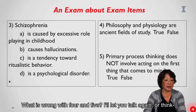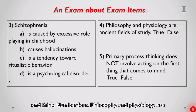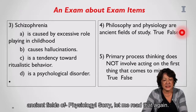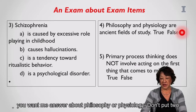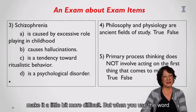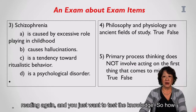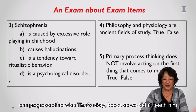What is wrong with items four and five? For number four: 'Philosophy and physiology are ancient fields of study.' Don't put two subjects in your stem because students don't know which one you want them to answer. For number five: don't use negative stems with the word 'not' — that tests reading rather than knowledge. So, how did you do? If you did well, we can progress. Otherwise, that's okay, because we didn't formally teach you much of this part.